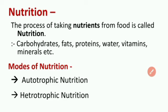First, what is nutrition? The process of taking nutrients from food is called nutrition. Nutrients include carbohydrates, fat, protein, water, vitamins, and minerals. When we take carbohydrates, fat, protein and other such nutrients from food, that process is called nutrition. Nutrition has two modes: the first is autotrophic and the second is heterotrophic.